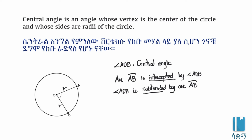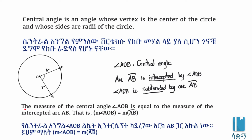The central angle AOB is subtended. The vertex is the center, and the sides are the radius of the circle. Here is the central angle theorem: the measure of the central angle AOB is equal to the measure of the intercepted arc AB.